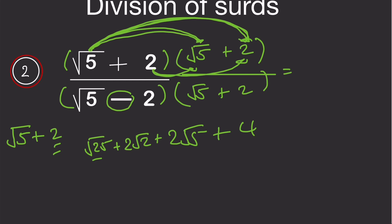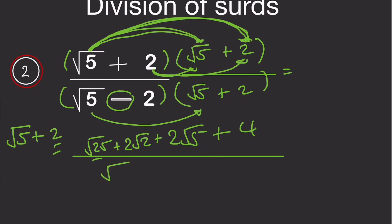For the denominator, we use the difference of two squares again. Root 5 times root 5 gives root 25, which equals 5. Then minus 2 times plus 2 gives minus 4. So the denominator becomes 5 minus 4, which equals 1.